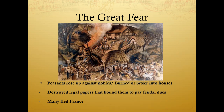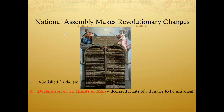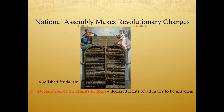The National Assembly officially abolishes feudalism and declares the Declaration of the Rights of Man — that the rights of all males are universal. They specify males, which frustrates the female population of France. At this stage, Louis XVI has a choice: acknowledge these changes and remain as king, or refuse. The nobles and Louis refuse to accept this new government, and this is where things turn more radical.